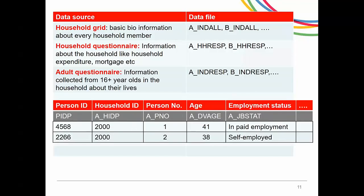The interviewer will then attempt to interview every person who is 16 years or above separately, and that information will be stored in the files called A underscore INDRESP, B underscore INDRESP, etc. Going back to the household we looked at, we know that two of them were eligible for this type of interview. If they both participated, then we will have information about them in A underscore INDRESP — for example, information about their employment status.